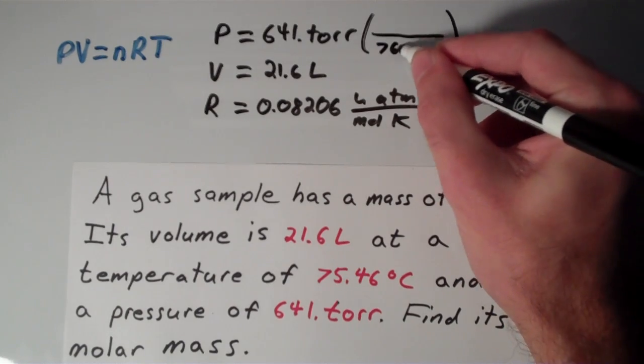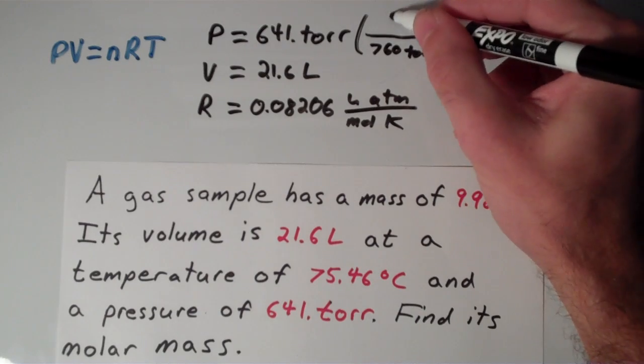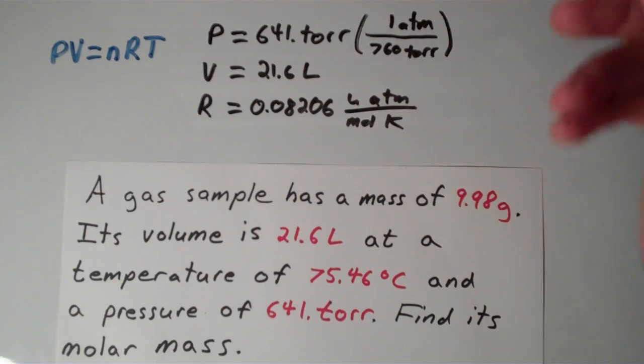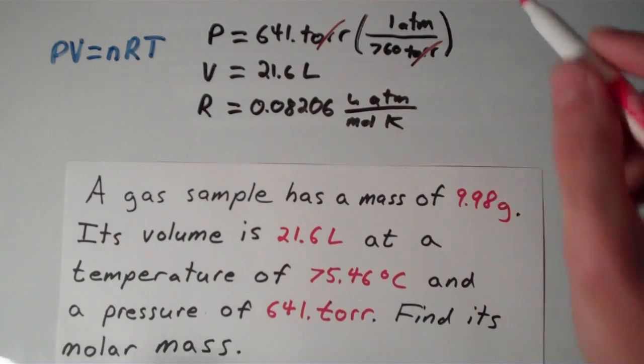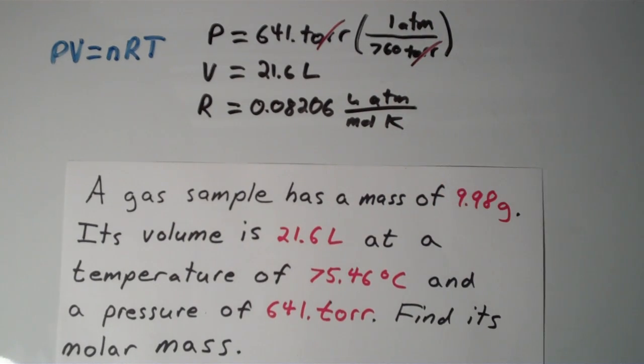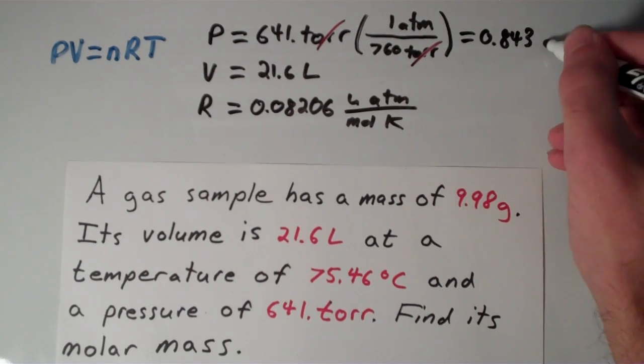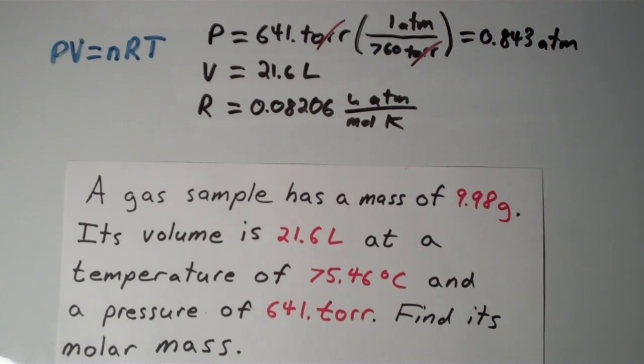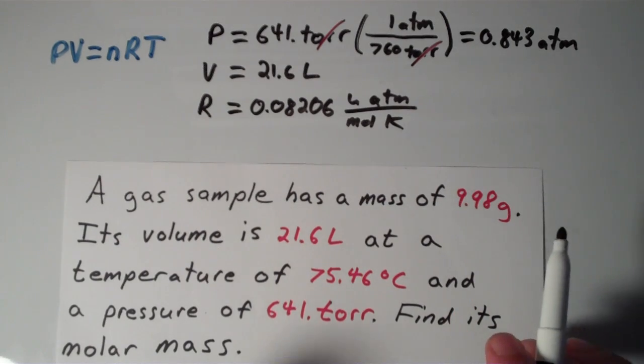So we have 760 torr is equivalent to one atmosphere. Torr cancels with torr, and we end up getting a pressure of 0.843 atmospheres. So now we have our pressure successfully converted into atmospheres.